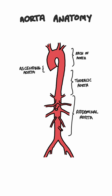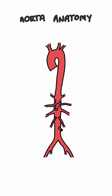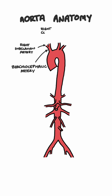The ascending aorta gives off the right and left coronary arteries to supply the heart. The first branch of the arch of the aorta is the brachiocephalic artery, which quickly divides into the right subclavian artery and the right common carotid artery. Next we have the left common carotid artery, and next to that the left subclavian artery.